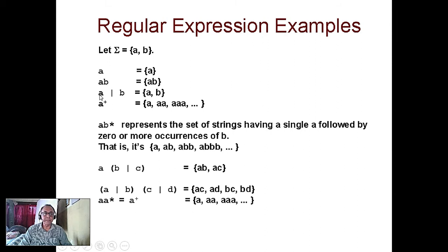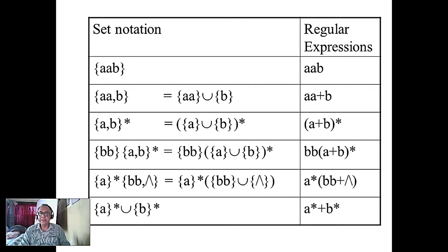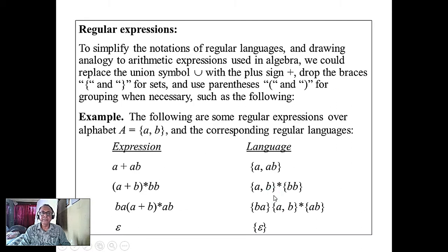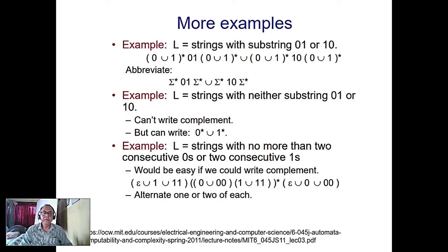In context-free grammar, the left-hand side has only one variable — like regular grammar. But in regular grammar, the variable is at only one end (either beginning or end, not both). Context-free grammar allows any combination of terminals and variables on the right-hand side, and from this you can generate a^n b^n. Regular expressions use star (*) for zero or more occurrences, the same concept as in commands like 'ls *.c'.